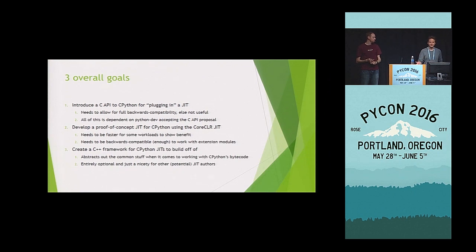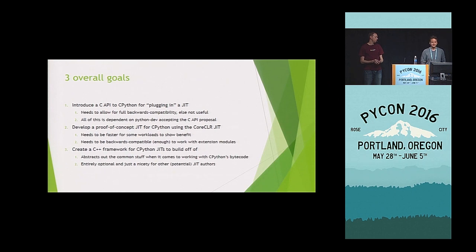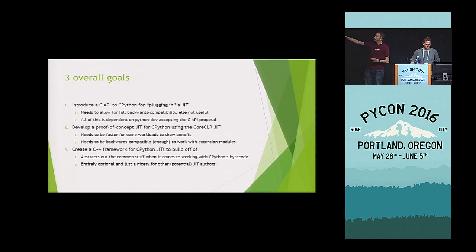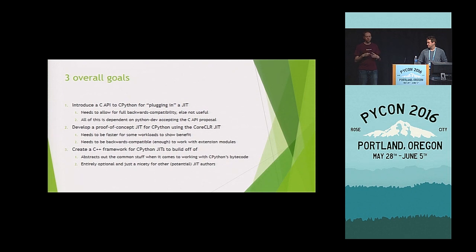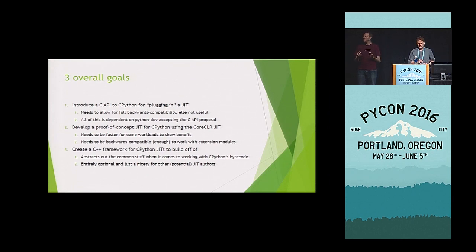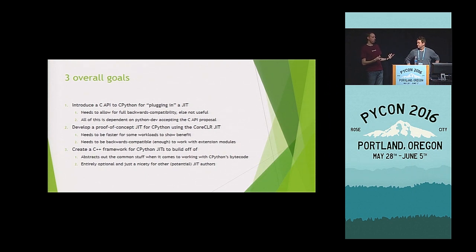We're not fully committed to core CLR — Chakra might work better for us, or we might find something else that works better with Python because it handles dynamic code better. The key point here is that C API for CPython — whether our JIT wins in the end or not, we personally honestly don't care. What we want is Python to win. The key point of this entire presentation is that the API works and we get it into Python, and that we have shown that it's feasible to do this kind of work with that API.